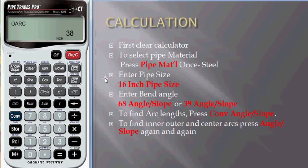Now, going back to our main calculation. On the calculator once again, change the angle of slope by entering the pipe size first: 16 inches. Press Pipe Size and enter 39, press Angle of Slope.